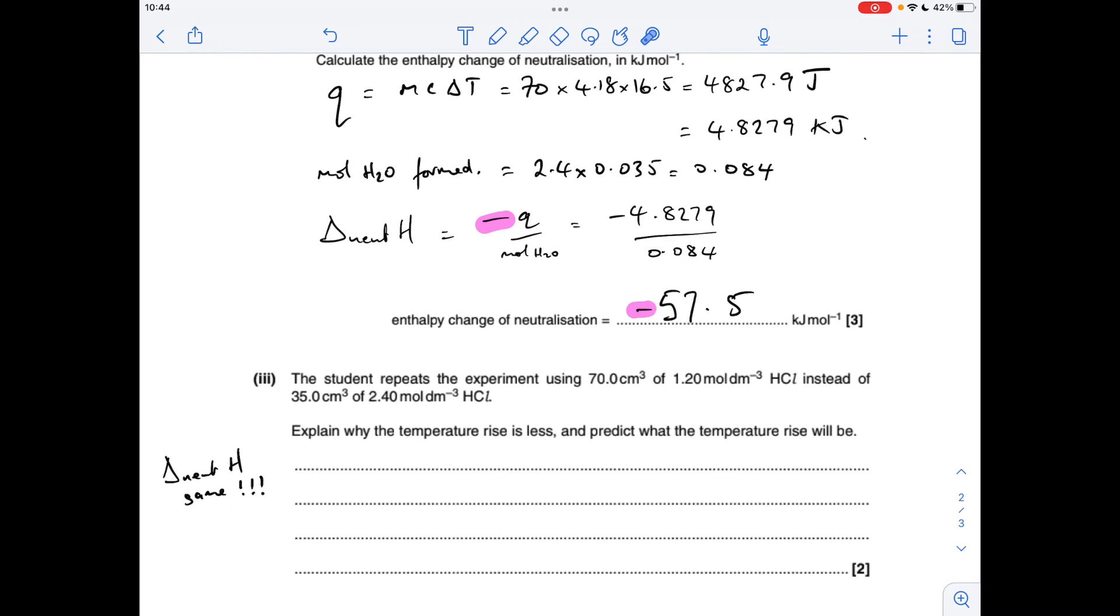Okay, so a potentially tricky bit to finish with. So the student repeats the experiment using 70 cm³ of 1.2 mole per decimeter cubed HCl instead of the original. So if you notice how the numbers stack up, the volume's been doubled, the concentration's been halved. So in terms of moles, they're not going to change, and enthalpy change of neutralisation doesn't change either. So you see I've written that up there. The enthalpy change of neutralisation is going to be the same anyway. So basically, the same amount of energy is going to be trying to heat up a larger volume of solution. So that's why you get a lower temperature.